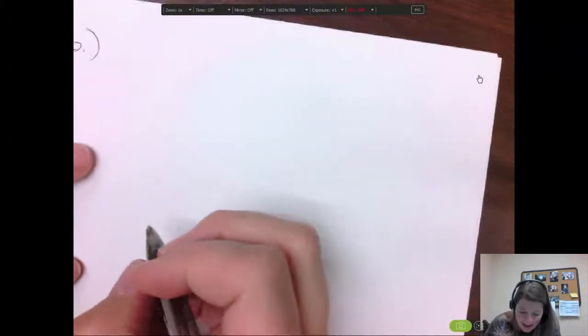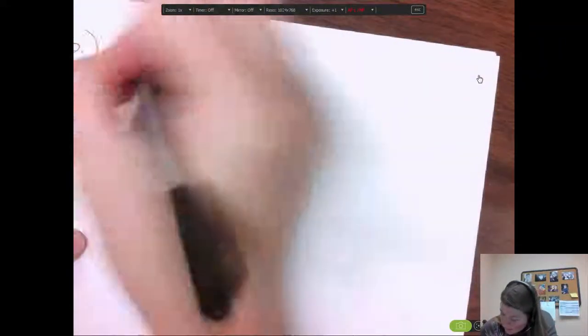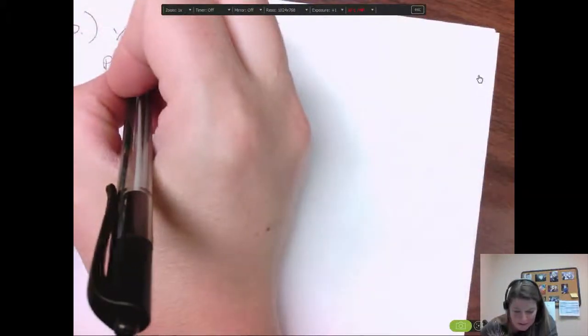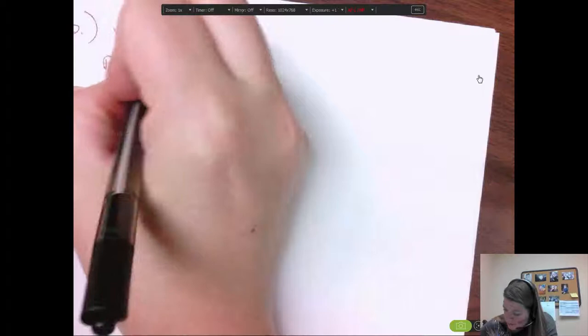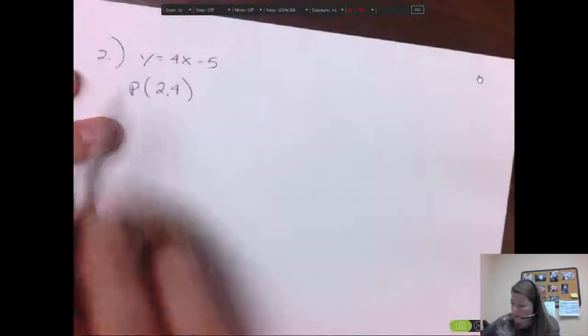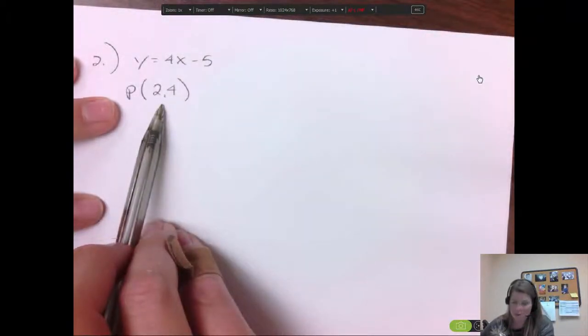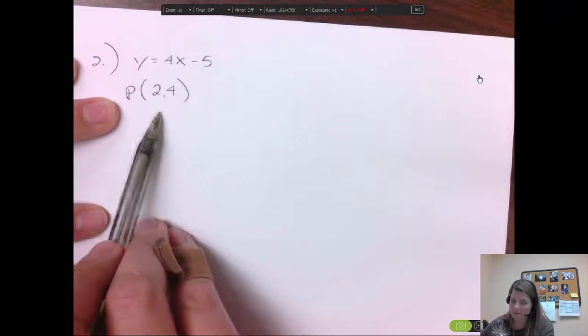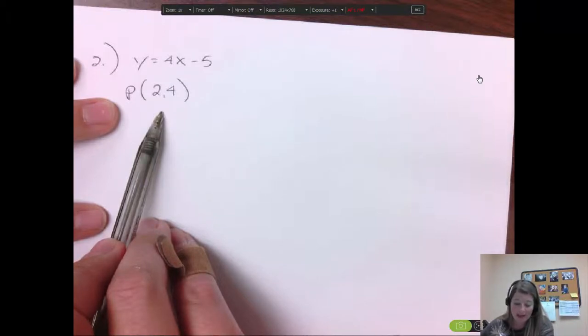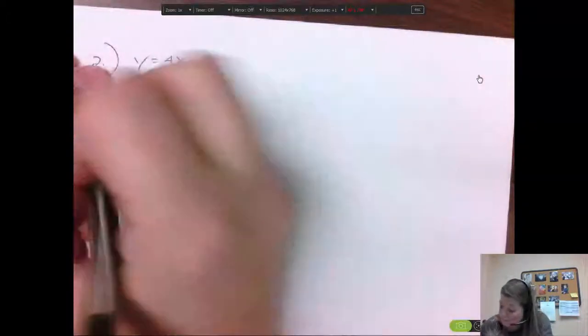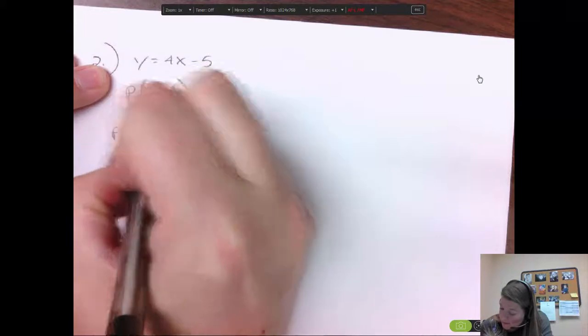So what if I have the equation y equals 4x minus 5, and I'm asked to find a line that goes through the point (2, 4)? So you're given an equation of a line and you're given a point. And it says, I would like a new equation where it's parallel to this one and goes through this point. The directions might say, find the equation of the line parallel to the given line or perpendicular, which we will do that too, to the given line. Well, you should know parallel. Parallel means you have the same slope.